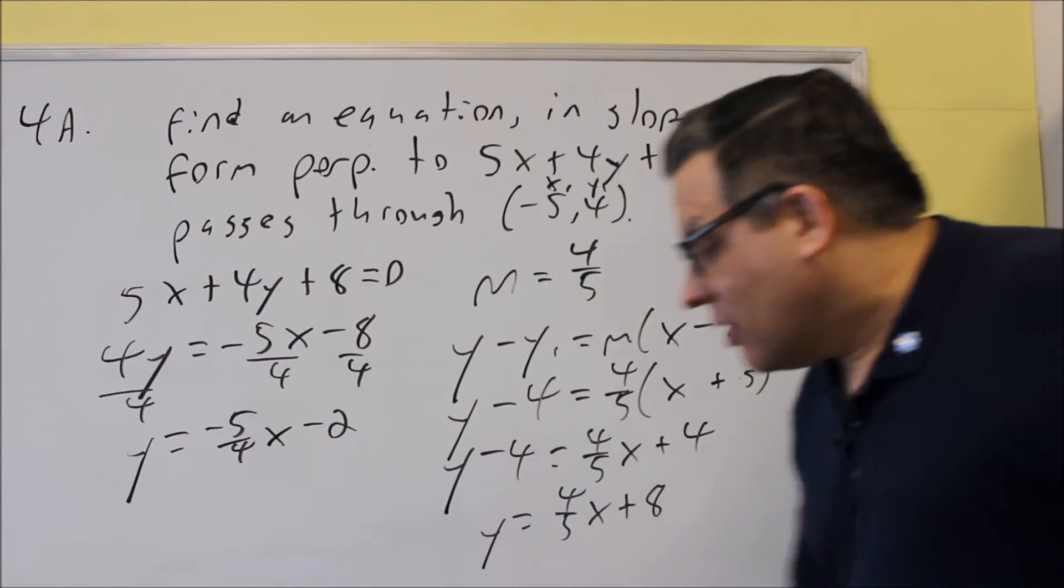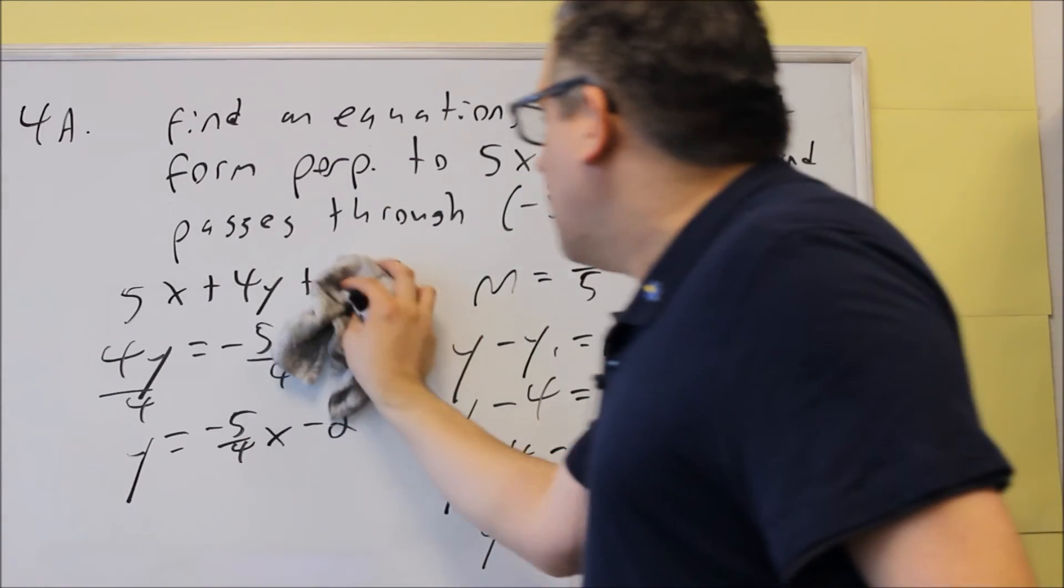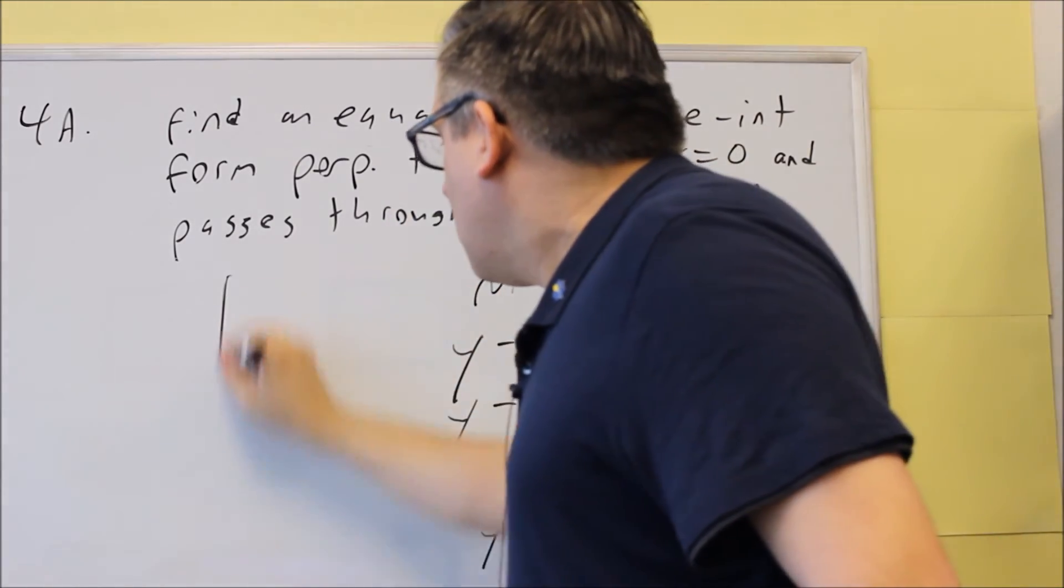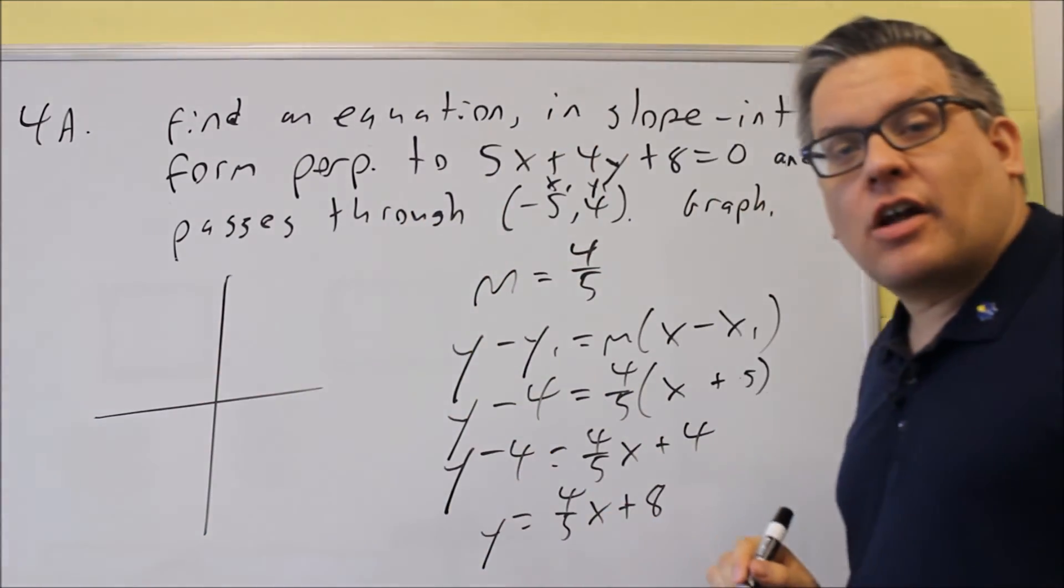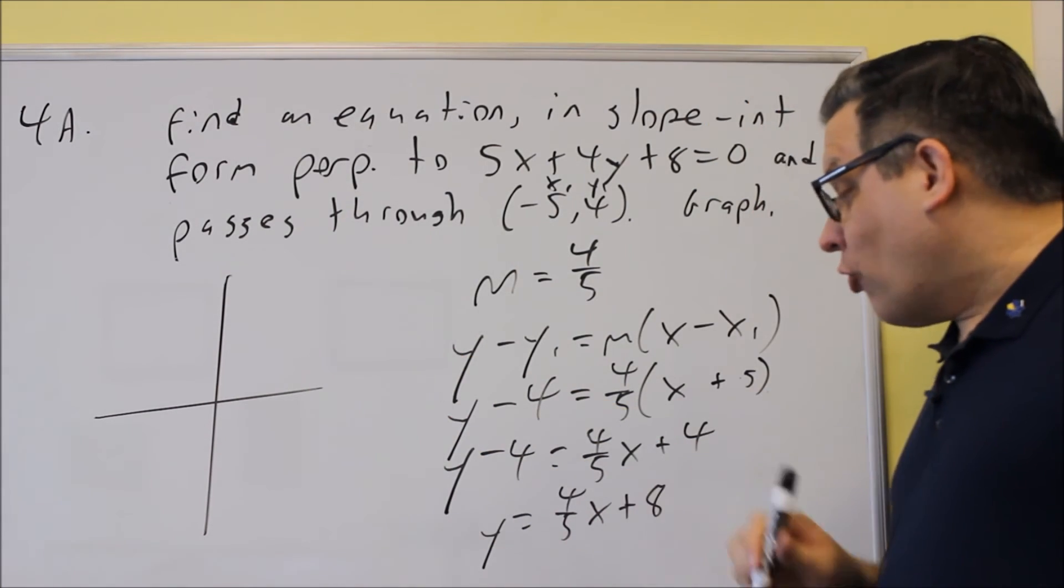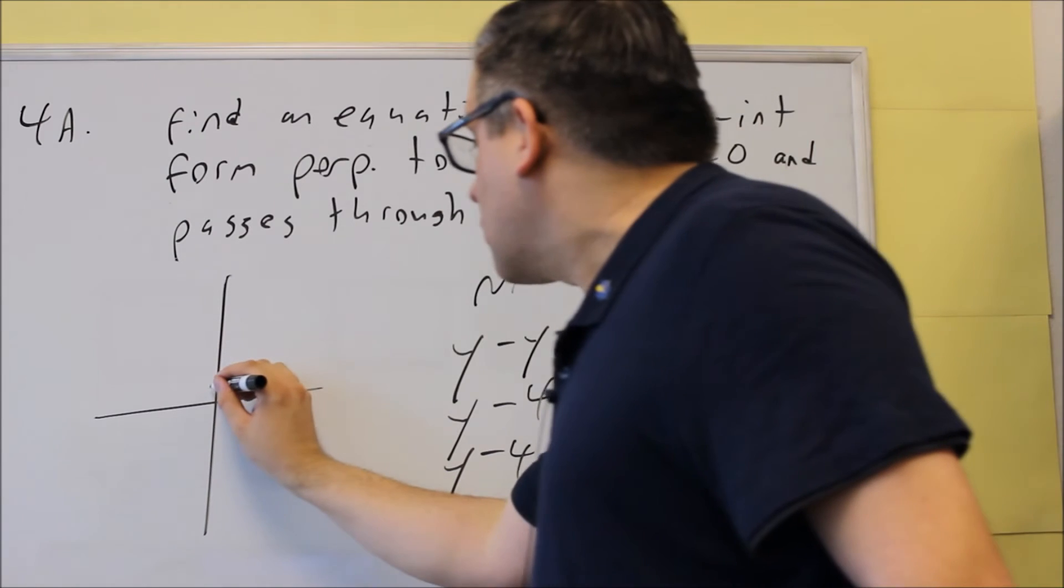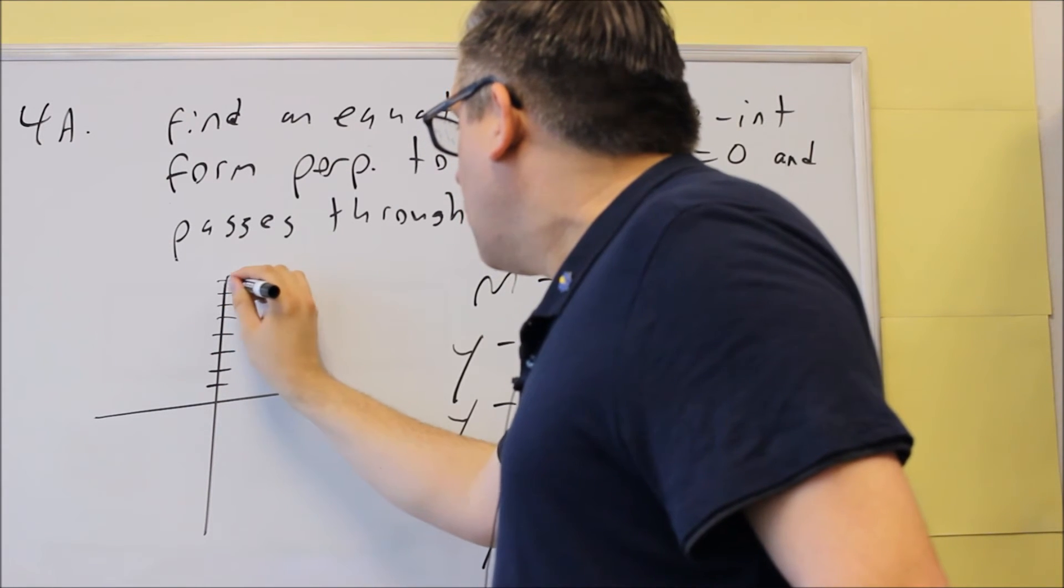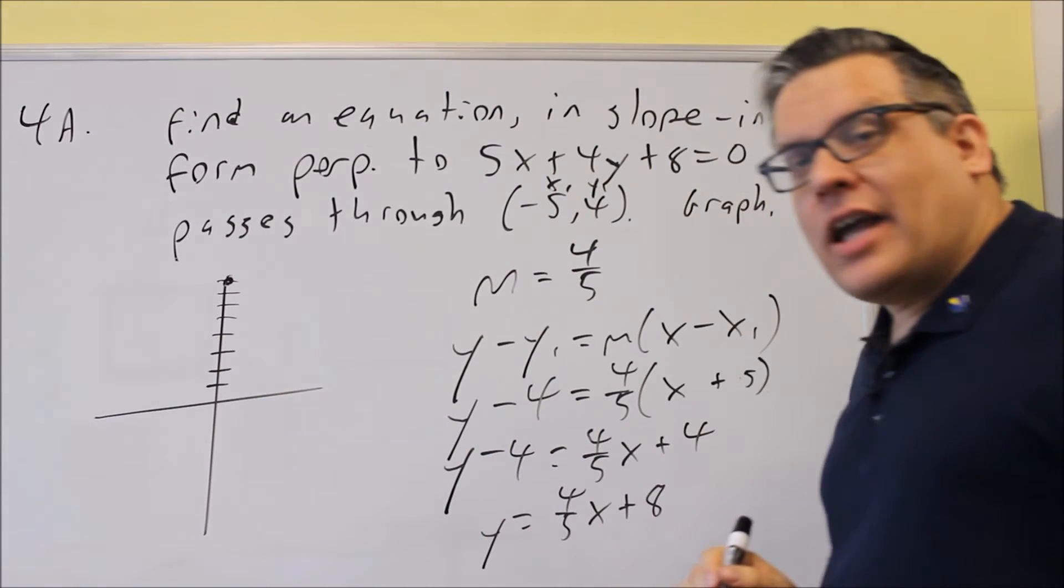This is perpendicular to this original line, and it goes through negative 5, 4. The last thing they ask you for is graph. So let me erase this here so we have some space. You'll have a grid that's going to be provided on it, so you're going to put the graph there.